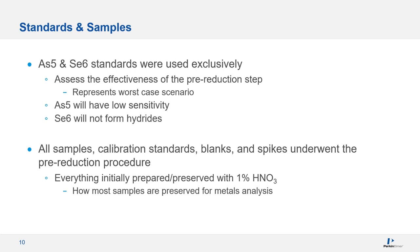For this work, we used certified pure arsenic-5 and certified pure selenium-6 standards exclusively. We did this to assess the effectiveness of the pre-reduction step — if you have pure As5 and pure Se6, no hydrides will form, representing the worst-case scenario. Some commercial 1000 ppm standards are arsenic-3 and some are arsenic-5, so you may not know what you have. Likewise, when analyzing real samples, we don't know the oxidation state of arsenic and selenium.